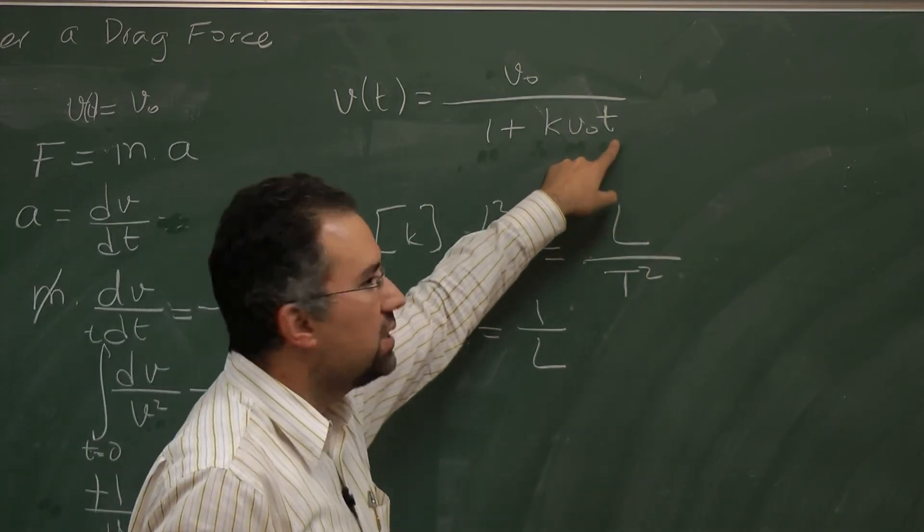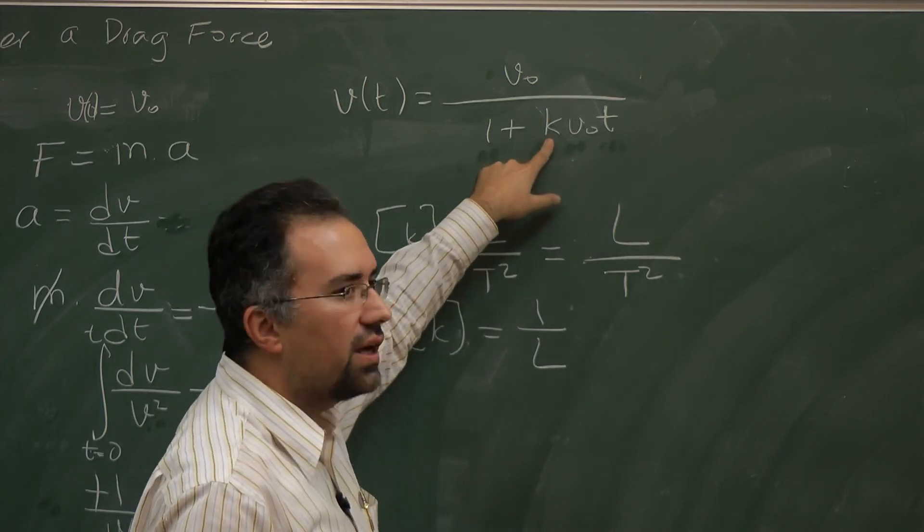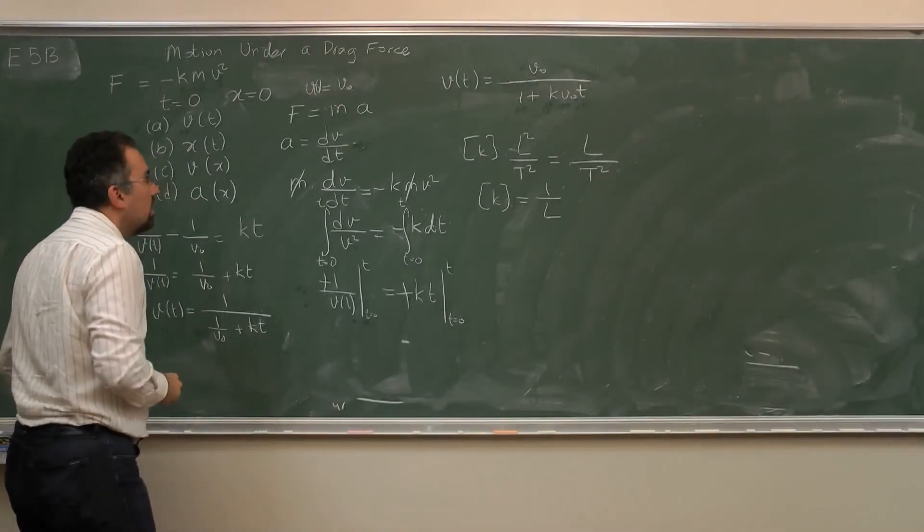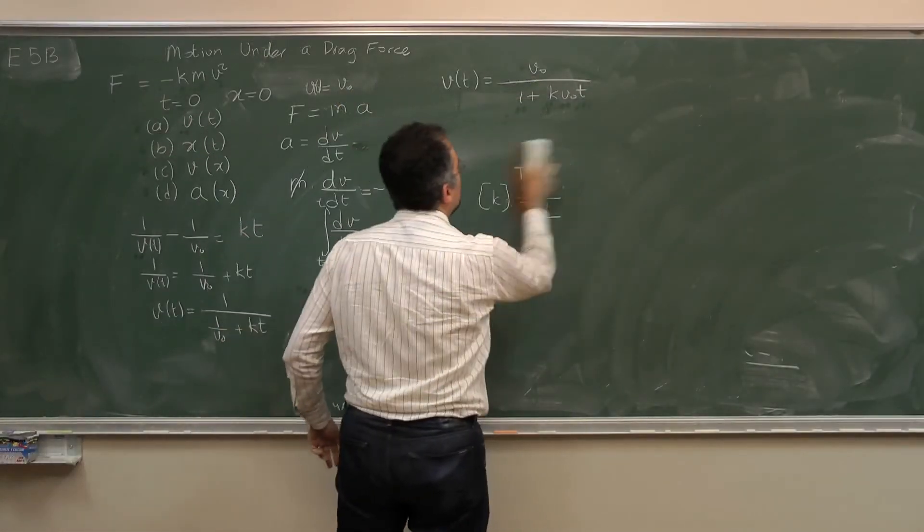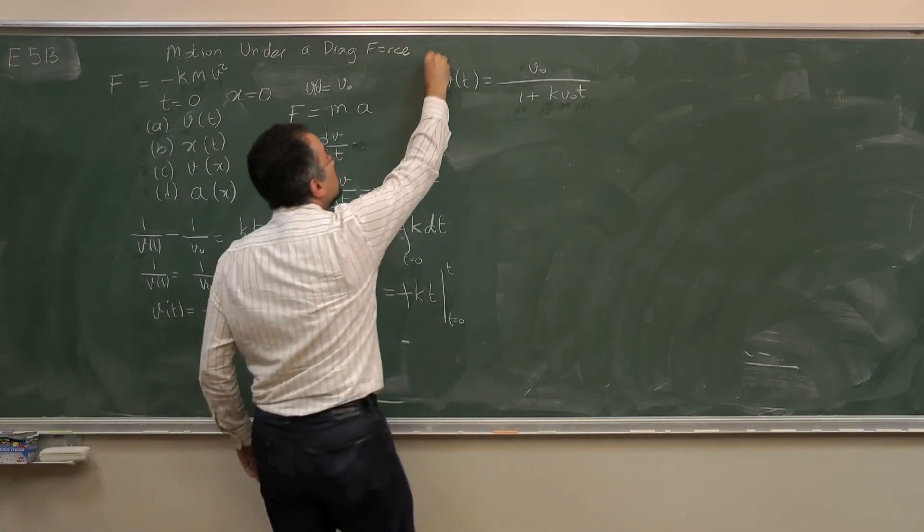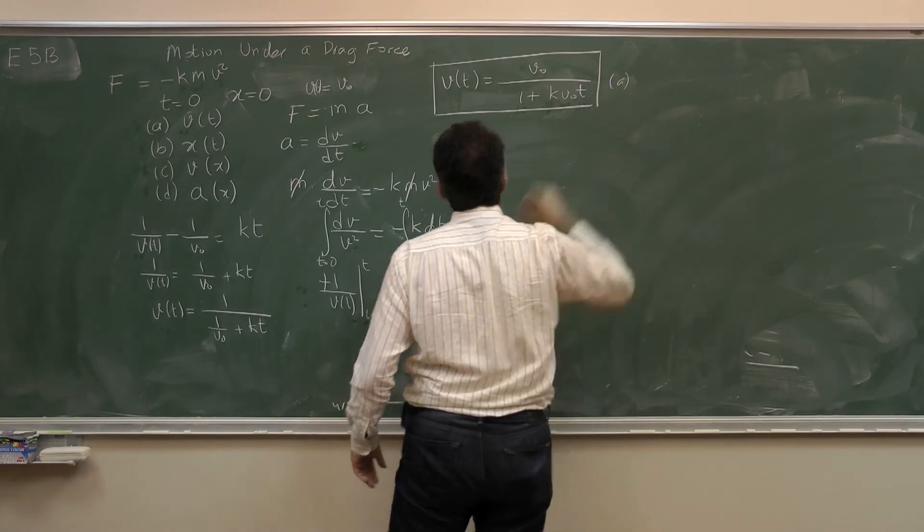So the units of k must turn out to be 1 over length. So v times t is obviously a distance, then 1 over length makes it unitless. So it works out. This is the answer to your part a.